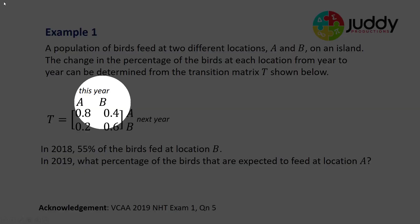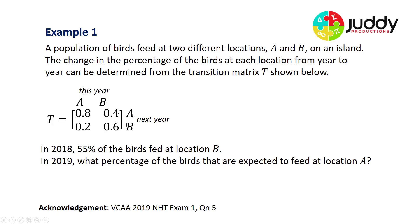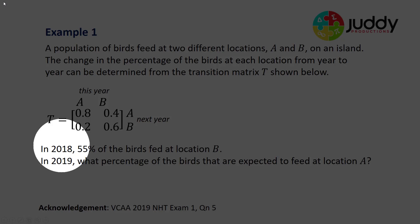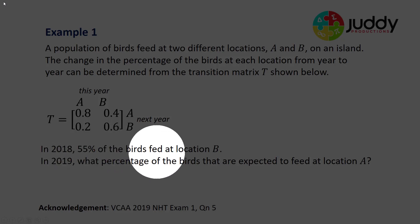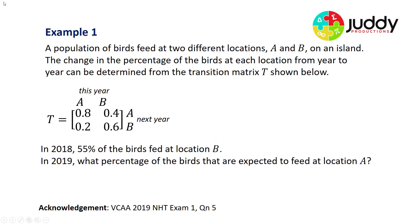Likewise our transition matrix shows us that those birds that feed at location B this year, 40% of them will transition to location A next year, whilst 60% will transition to location B next year. In addition we're told that in 2018, 55% of the birds feed at location B and we're asked to calculate in 2019 what percentage of the birds are expected to feed at location A.